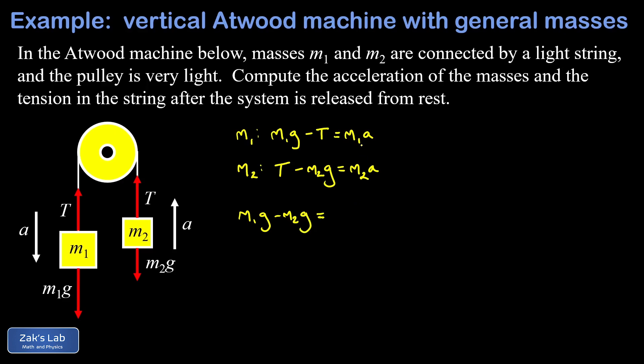The point here is to solve for the unknown acceleration. On the right hand side I could factor an a out of that and write it as a times the quantity m1 plus m2. The left side could also be factored: I could write that as m1 minus m2 all multiplying g.